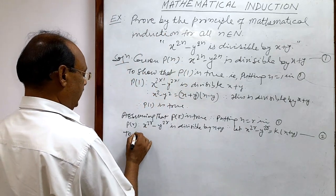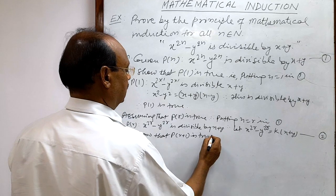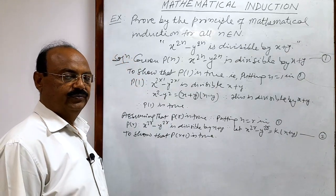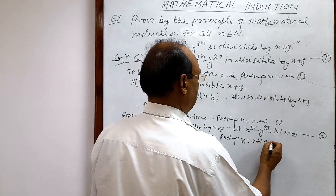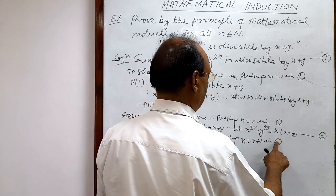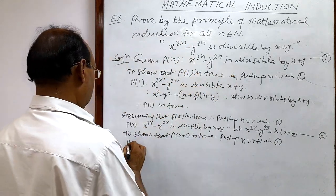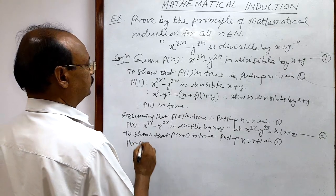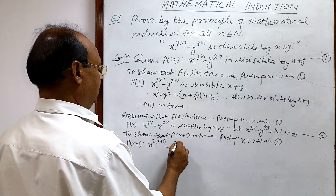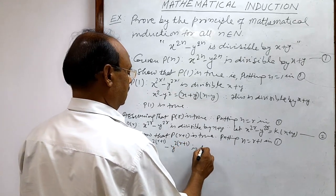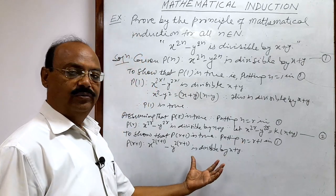In the third and last step, we have to show that P(r+1) is true. By putting n equal to r plus 1 in relation number 1, P(r+1) states: x to the power 2(r+1) minus y to the power 2(r+1) is divisible by x plus y. We have to prove this.